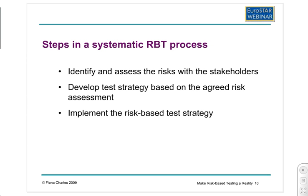What we try to do is implement a systematic risk-based testing process. The principal steps are: first, we get together with our stakeholders and together in a collaborative process, we identify what the risks could be in the implemented system and we assess those risks. We then take that risk assessment and develop our test strategy based on it. Finally, we implement the risk-based test strategy — we use it for our testing, our bug fixing, and so on throughout all of the testing process.